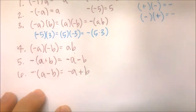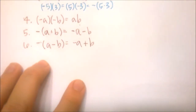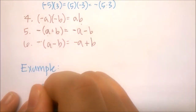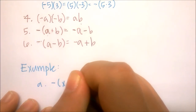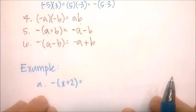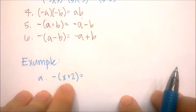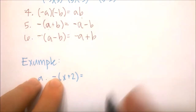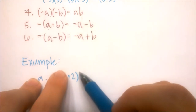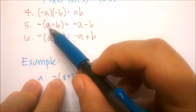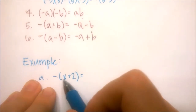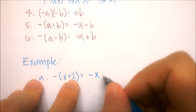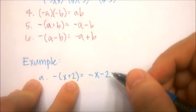Let's look at a couple of examples. Take the algebraic expression negative of x plus 2. When manipulating this in a problem, it's easier to distribute the negative. This uses property 5 — negative of a plus b equals negative a minus b. So negative times x is negative x, and negative times positive 2 is negative 2, giving us negative x minus 2.